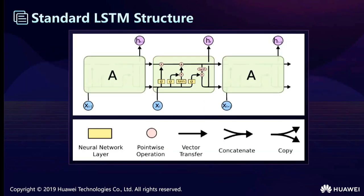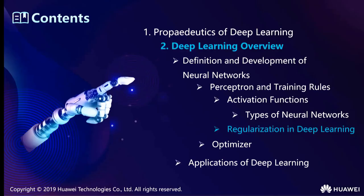RNNs may face gradient vanishing problems. LSTM — Long Short-Term Memory — was proposed to address scenarios where there is a large gap between the relevant information and the point where it is needed. LSTM can connect previous information over a long period of time. It adds gate functions and additional mechanisms in the hidden layers to give the model memory, allowing it to remember important information from previous time steps.